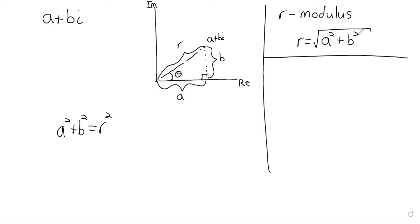R equals the square root of A squared plus B squared. Then, the cosine of theta is A divided by R and the sine of theta is B divided by R.